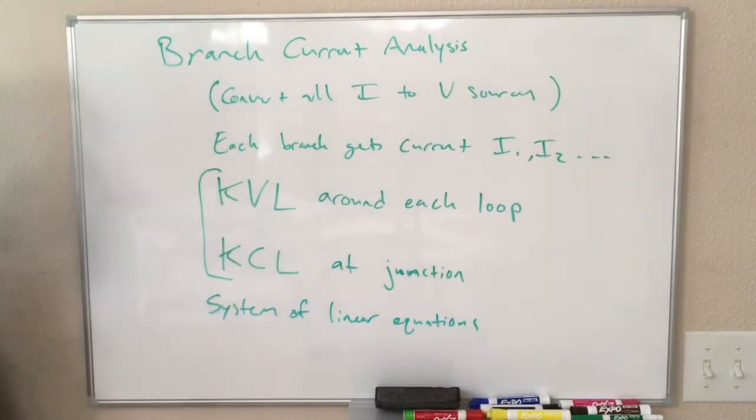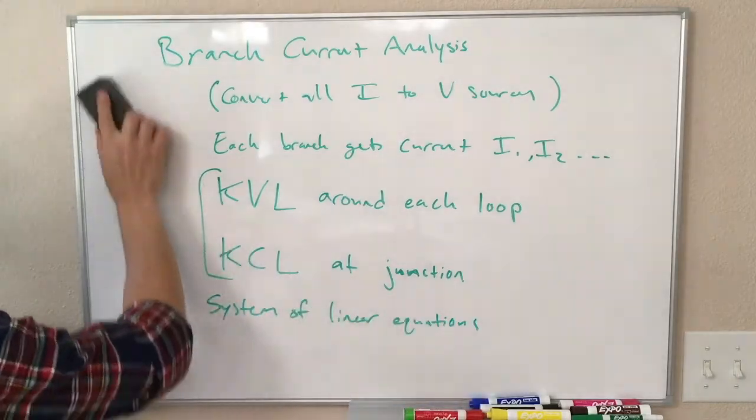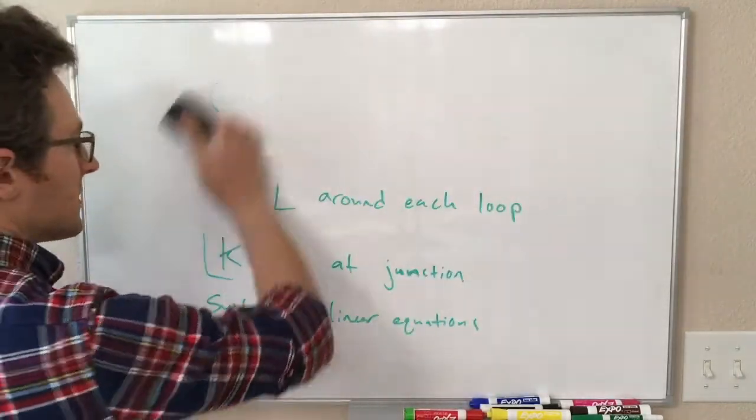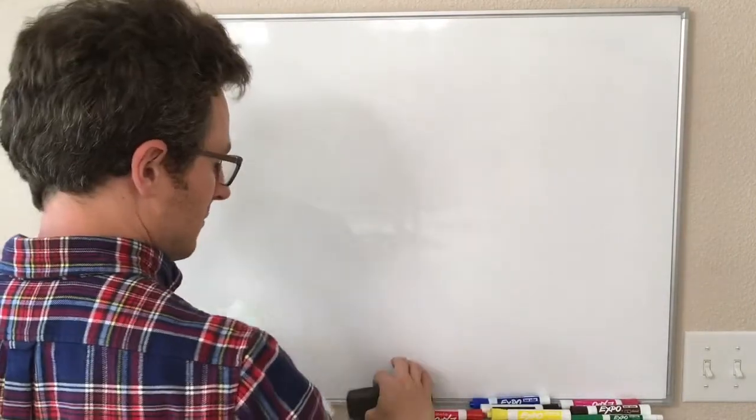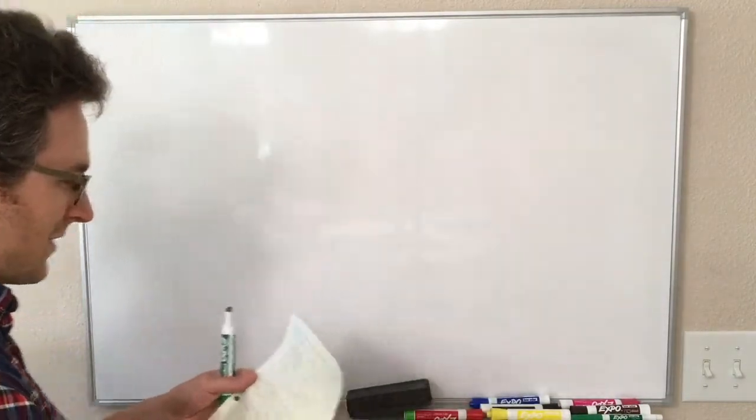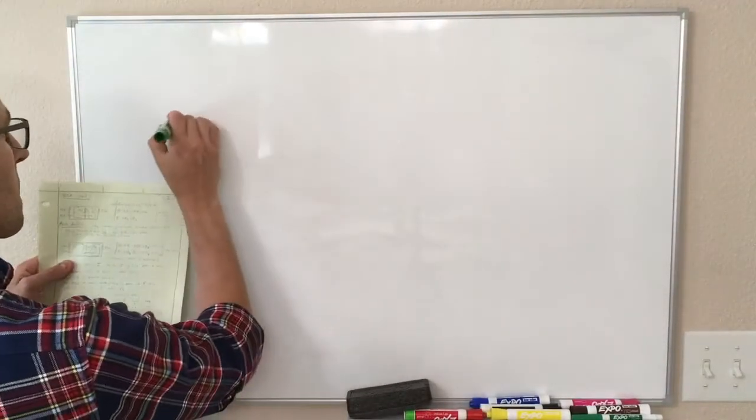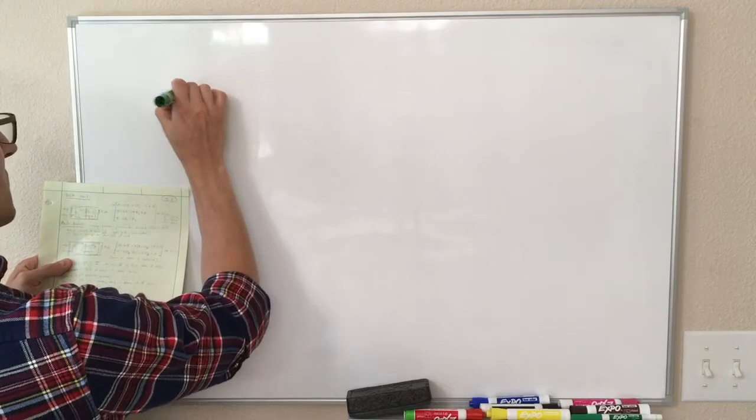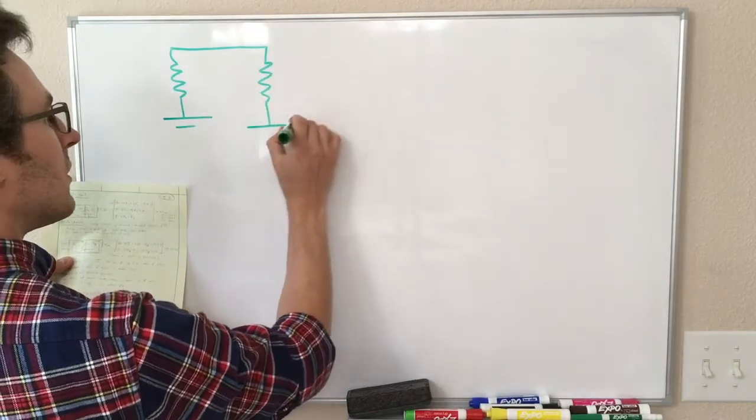Okay. As will often be the case here, I think this is better illustrated with an example. So let's say we have a circuit that looks like this. So this is going to be another one with multiple sources.